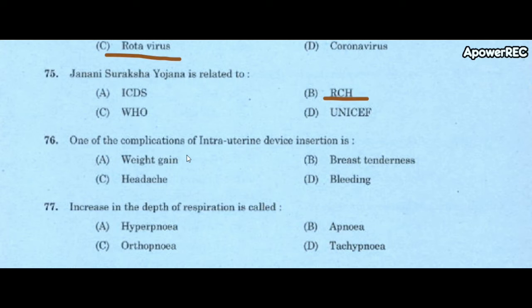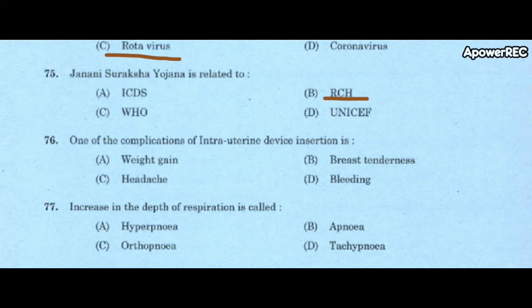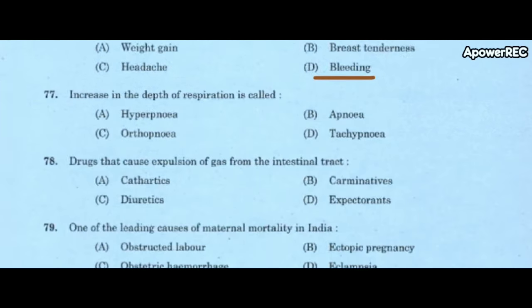Next question: one of the complications of intrauterine device insertion is A) bloating, B) breast tenderness, C) headache, D) bleeding. Correct answer is bleeding. One of the complications of intrauterine device insertion is bleeding.